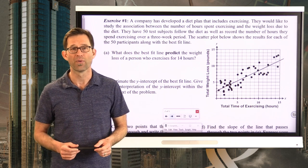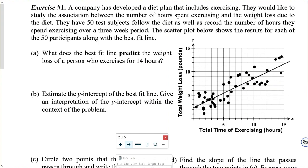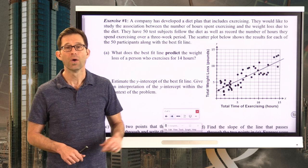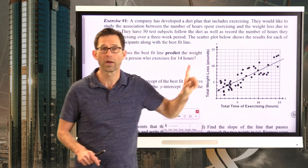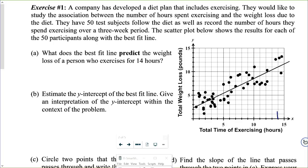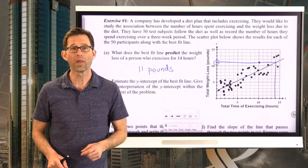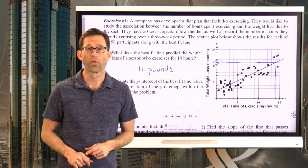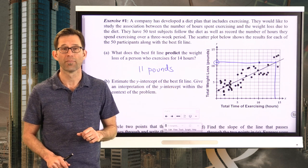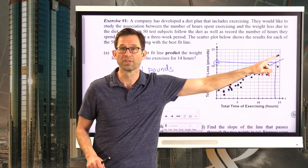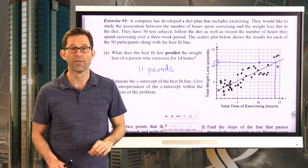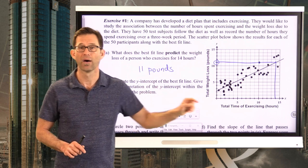If you come over to 14 on the graph, go to the line of best fit, and come over, it looks like it predicts 11 pounds. That's why we want lines of best fit — to be able to say to somebody: if you follow this diet plan and exercise for 14 hours, you're going to lose 11 pounds. The line itself predicts 11 pounds for 14 hours.